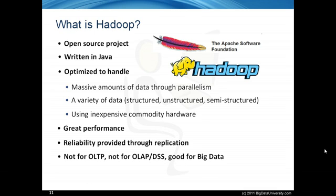Hadoop is not suitable for online transaction processing workloads where data are randomly accessed on structured data like a relational database. It is also not suitable for online analytical processing or decision support system workloads where data are sequentially accessed on structured data to generate reports that provide business intelligence. Hadoop is used for big data — it complements online transaction processing and online analytical processing, and is not a replacement for a relational database system.